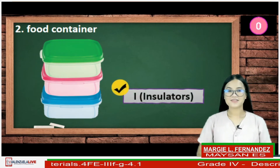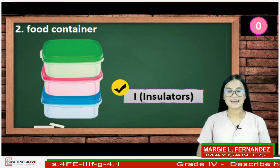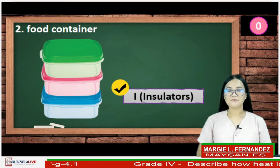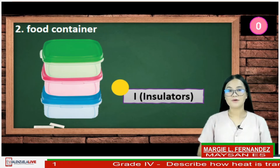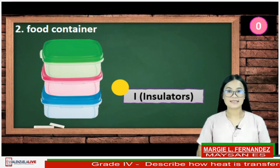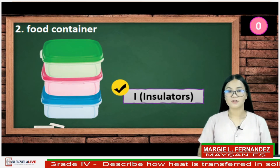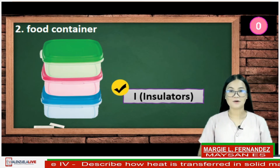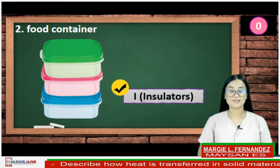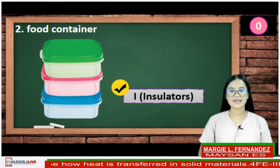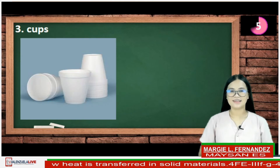If your answer is I, you are amazing. The food container was made of plastic. Heat can travel slowly through plastic objects, therefore it is classified as an insulator.